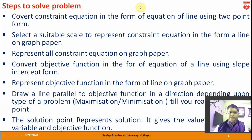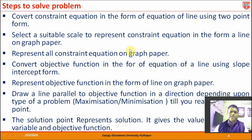What we need to do is convert the constraint equations in the form of a line using the two-point formula, and we have to select a suitable scale so that we can represent it on graph paper. We also need to convert the objective function into slope-intercept form on the same graph paper, and then move the objective function line towards the extreme point depending on whether it is a maximization or minimization problem.